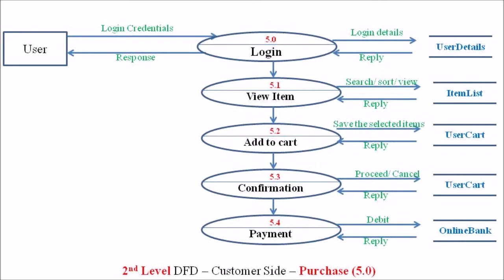Once the login credentials are correctly given, the user entity — represented in a rectangle — can move to the second process, process 5.1, named view item. The view item process deals with displaying all the essential entities or data stored in the item list data area. The item list data area stores the details of products available on that particular website. A customer can search, sort, or view the different items stored in the item list data area.